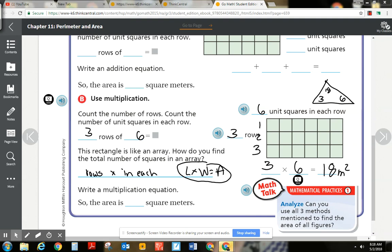So write a multiplication equation. Three times six equals 18. And the area is 18 meters squared.